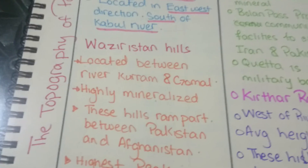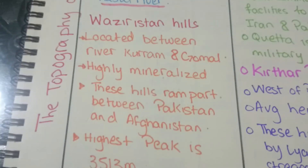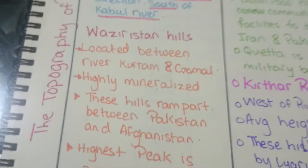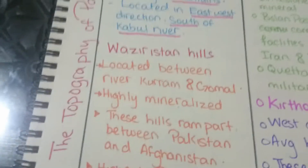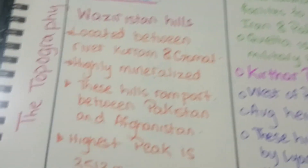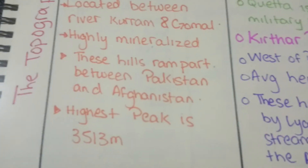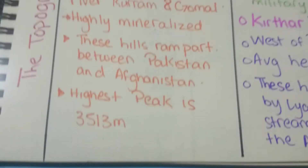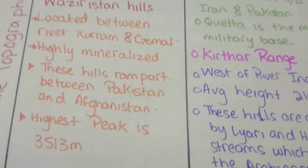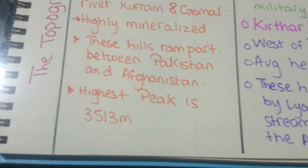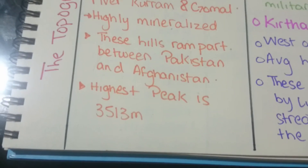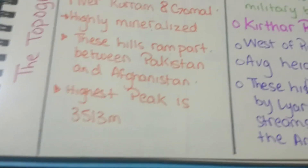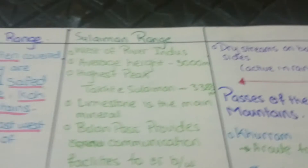Waziristan Hills are located between the rivers Kuram and Gomal. They are highly mineralized and serve as a rampart between Pakistan and Afghanistan. The highest peak here is 3,513 meters.